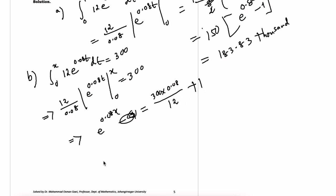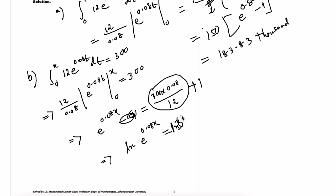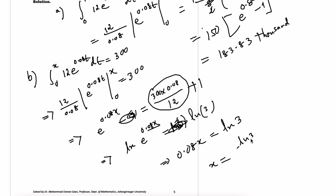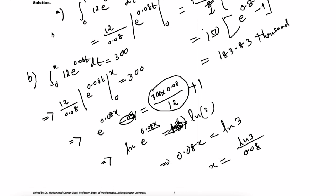Moving the 1 to the right side, we get e to the power 0.08x equals 2 plus 1 which is 3. Taking the natural log on both sides: 0.08x equals log 3. Since log e equals 1, therefore x equals log 3 divided by 0.08, which equals 13.733 years. So this is the answer.